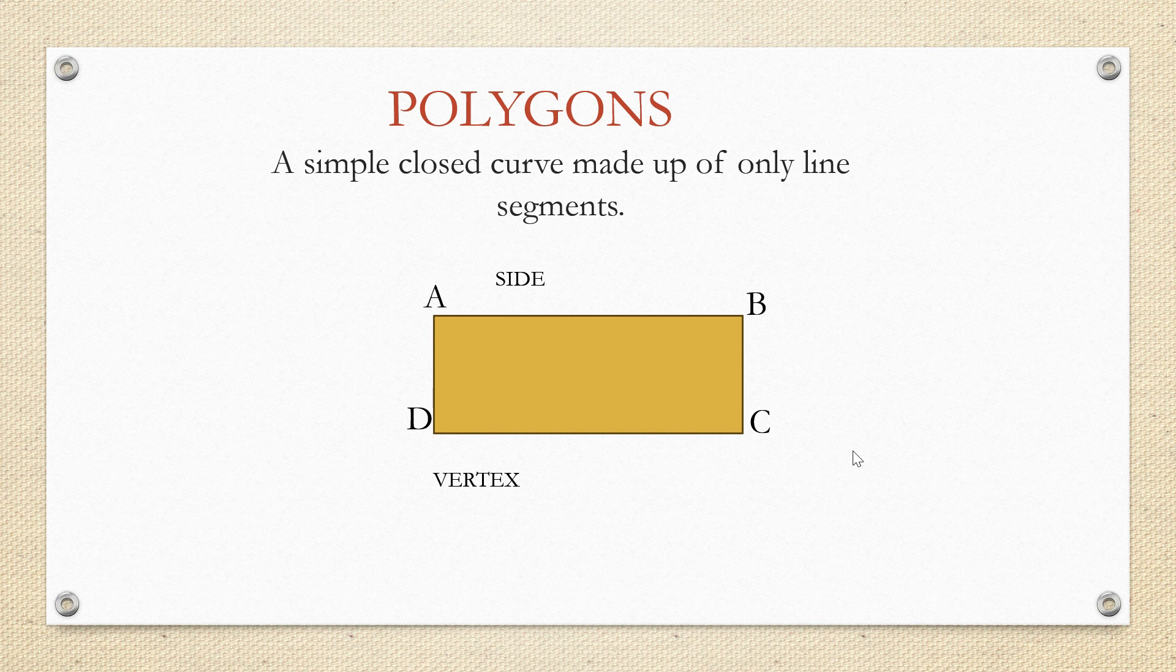Now when we join any two non-adjacent sides with a line segment, that particular line segment is called a diagonal. Here A and C form non-adjacent vertices and B and D form non-adjacent vertices. On joining this, for this particular polygon we will get two diagonals.